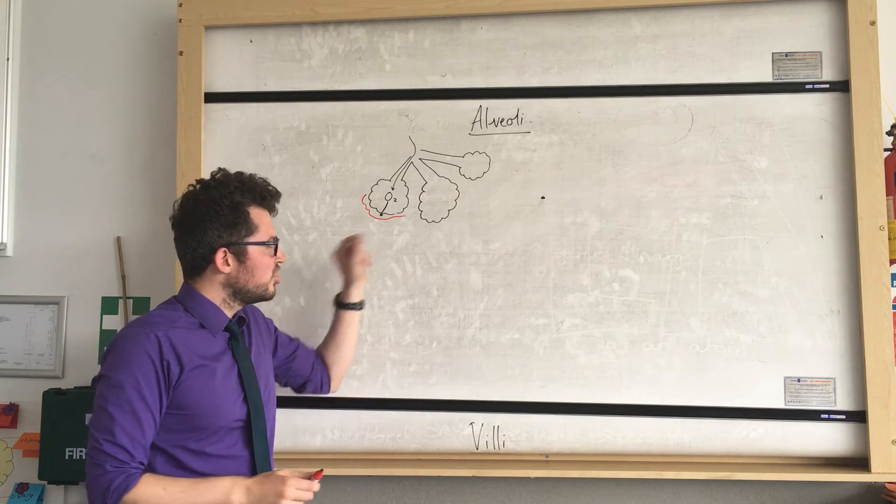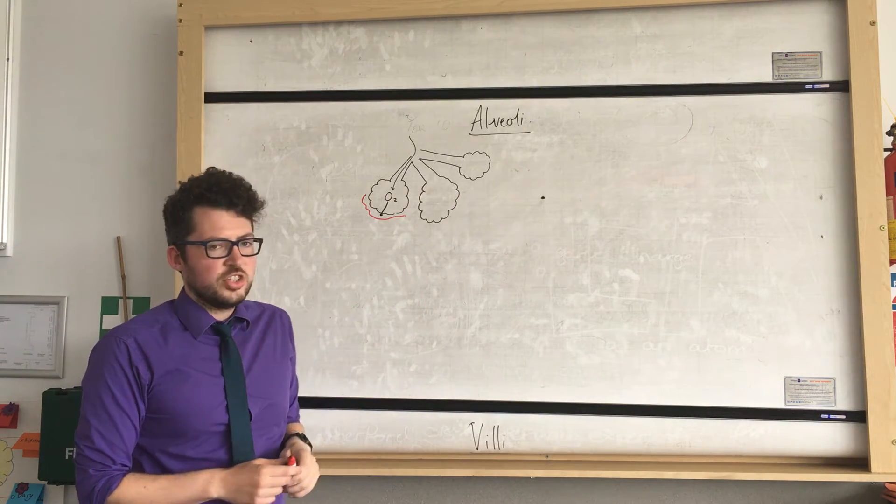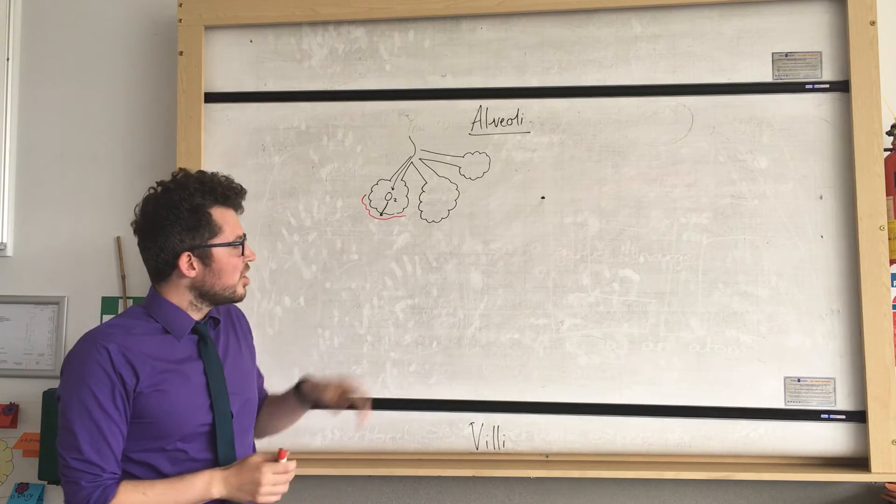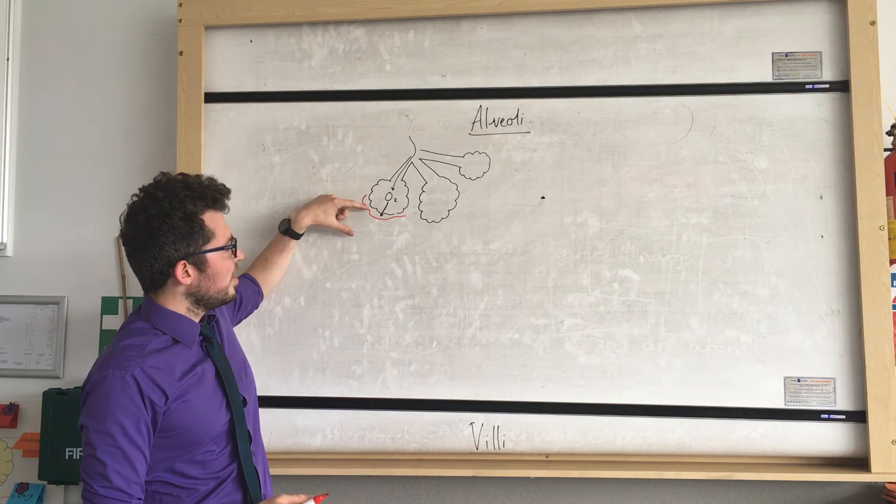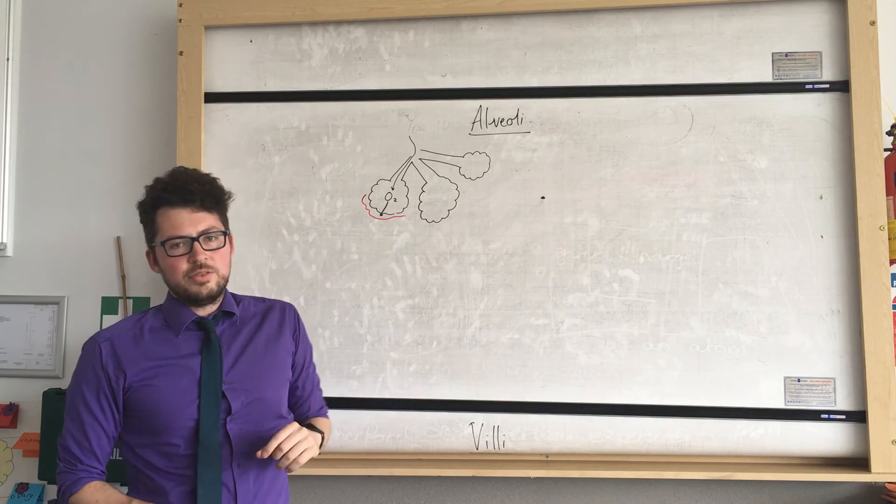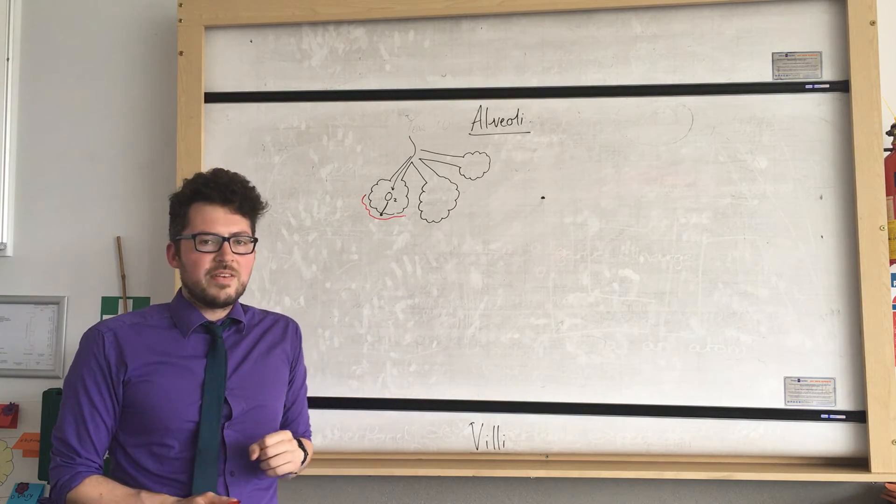The key point is that it's just diffusion in the alveoli, so just diffusion of oxygen. Now what would also happen is carbon dioxide would diffuse from the blood into the alveoli and then be breathed out. So that's the example of alveoli.